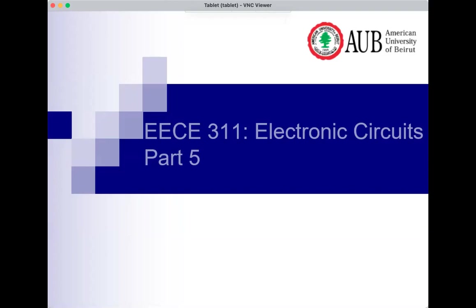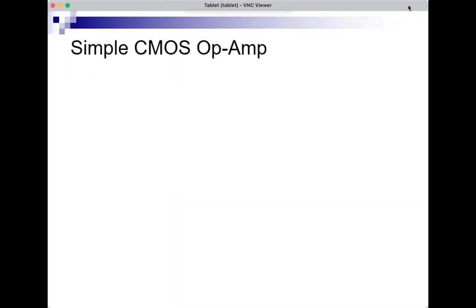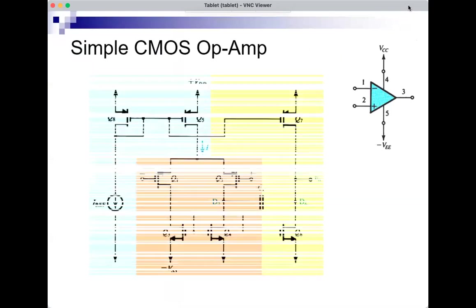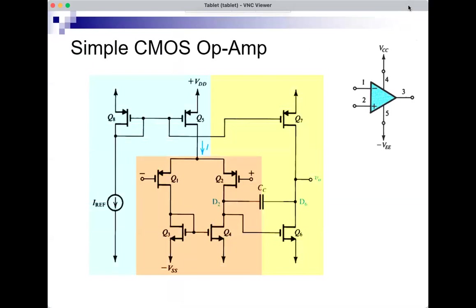After our discussion of the operational amplifier and the analysis of some circuits that use the op-amp and also some limitations of the op-amp, what we will start with now is look at what's inside the op-amp. Let's consider a very simple CMOS operational amplifier. Inside we can count 8 MOSFETs, there's a reference current source, probably implemented using more transistors and resistors, and there is a capacitor.